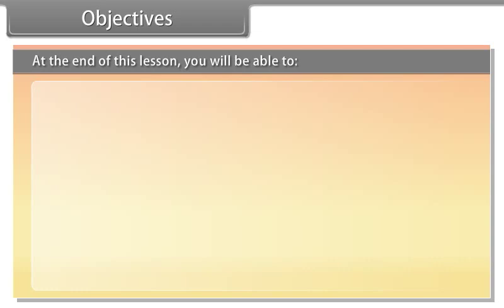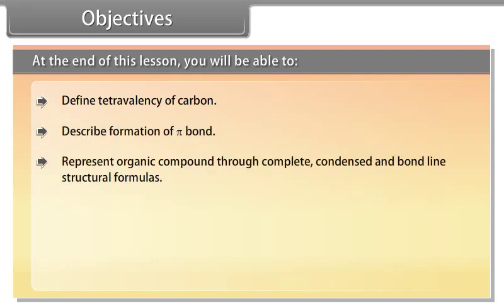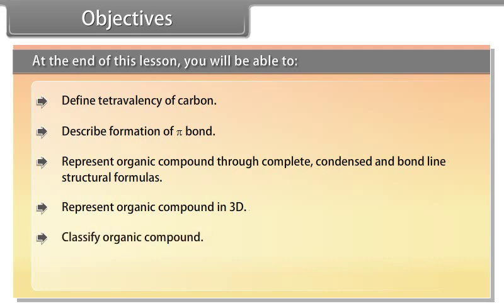At the end of this lesson, you will be able to: define tetravalency of carbon; describe formation of pi bond; represent organic compound through complete, condensed, and bond line structural formulas; represent organic compound in 3D; classify organic compound; describe nomenclature of organic compound.